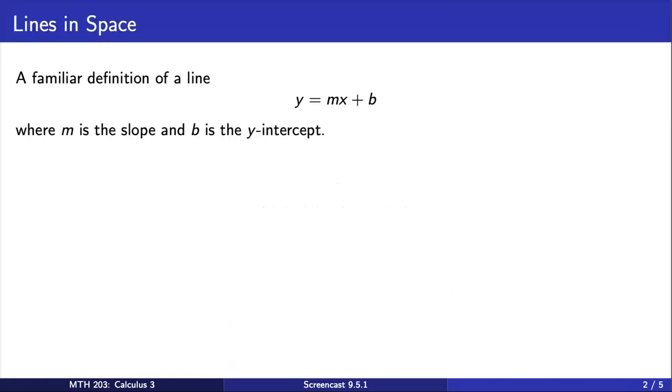You're likely familiar with the slope-intercept definition of a line. This definition works for two dimensions. We'd like to extend the definition of a line to three or higher dimensions. However, the notion of slope, often referred to as rise over run, isn't well defined for three or higher dimensions.